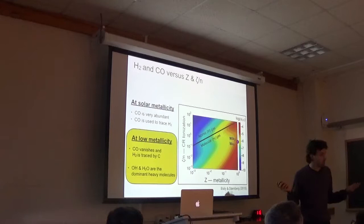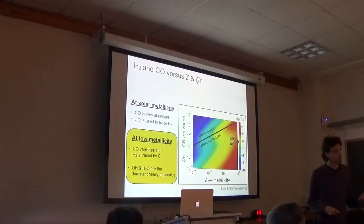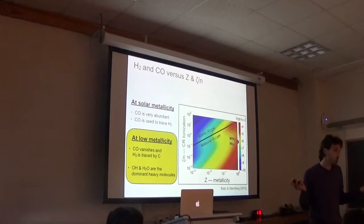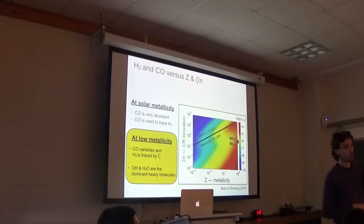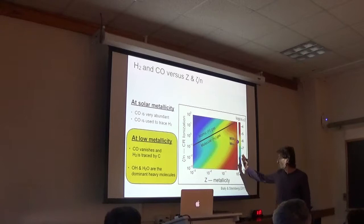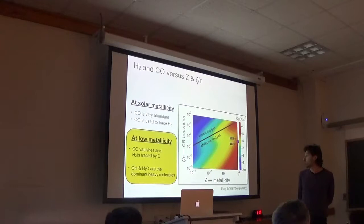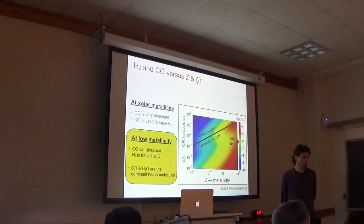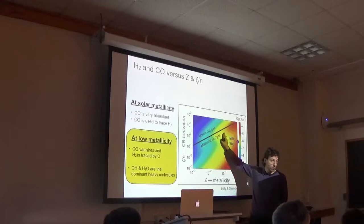We formulate the rate equations, solve them as functions of time and we approach a chemical equilibrium after the chemical time and this gives us the species abundances of all the molecules of interest. So these are the most important parameters: the metallicity relative to solar, the cosmic ray ionization rate relative to density, the intensity of UV, and the temperature.